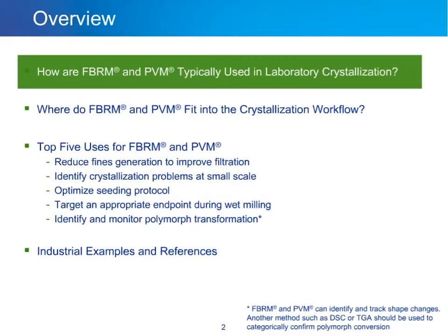Finally, to wrap up at the end of the webinar, we're going to look at a couple of industrial examples and a reference list. You'll notice an asterisk beside the polymorph transformation bullet. FBRM and PVM can identify and track shape changes or habit shifts, but it's always vital to use another method such as DSC or TGA to categorically confirm the presence of a polymorph and the conversion.